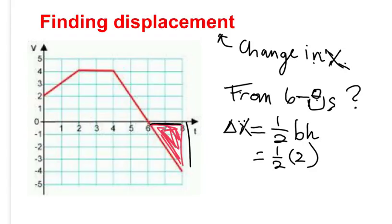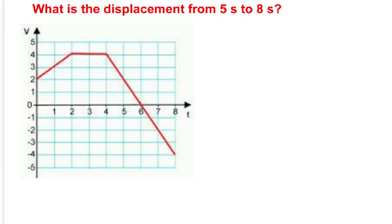Here's my summary. To find acceleration on a velocity-time graph, you take the slope. To find change in position, or displacement, between times a and b on a velocity-time graph, you need to find the area under the graph. Hopefully this will help you start to try the rocket problem. Thank you.